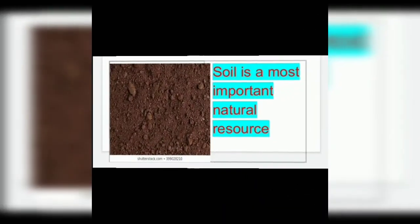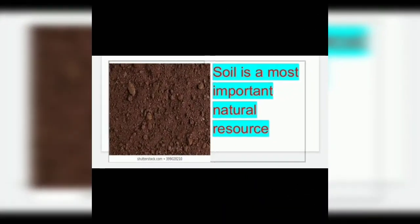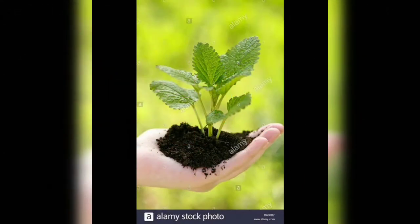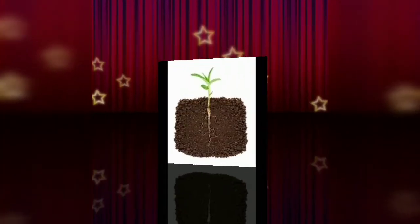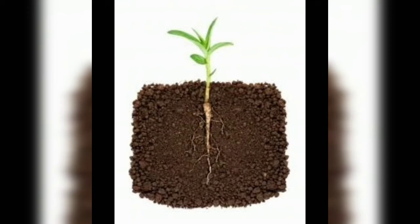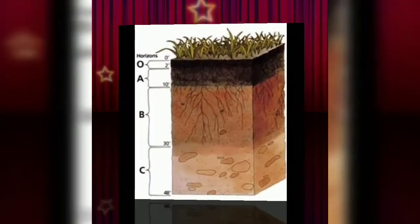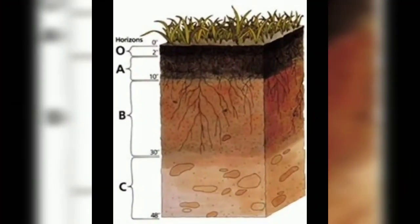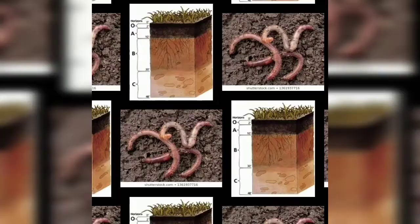Hello children. Soil is one of the most important natural resources. It provides support and plants anchor itself to the soil. Soil also supplies water and nutrients for the growth of the plant. Soil consists of many layers. Soil is the shelter for many organisms. Agriculture is mainly dependent on soil.